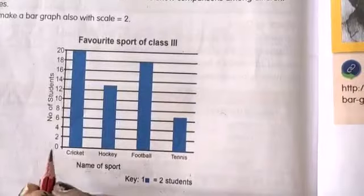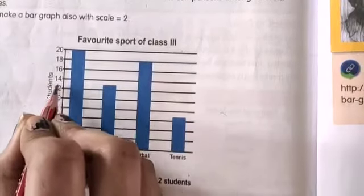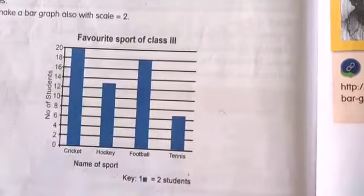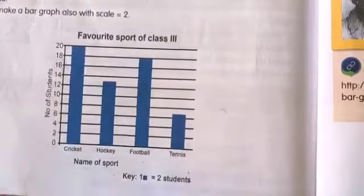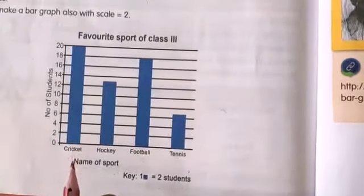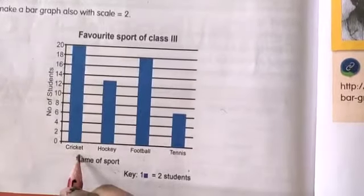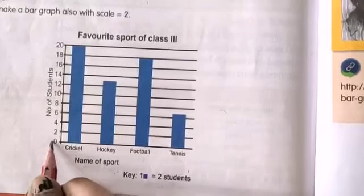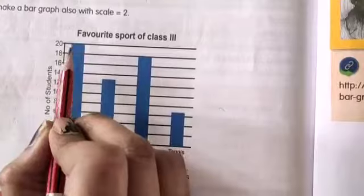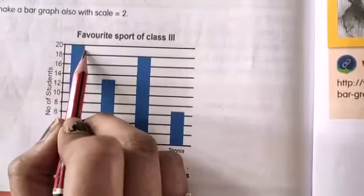So here they gave 2, 4, 6, 8, 10, 12, 14, 16, 18, 20 is number of students. So in this number of students, what we have to do - first here they gave the cricket. So cricket, how many students they like? They like 20 because the bar is till 20.